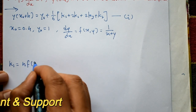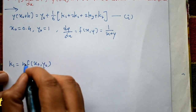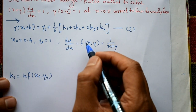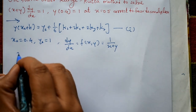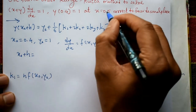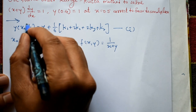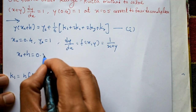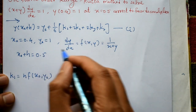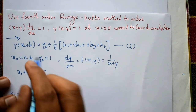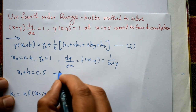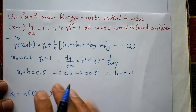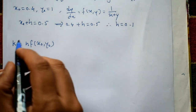To find k1, we need the h value. Since y(x₀ + h) = y(0.5), we have x₀ + h = 0.5 and x₀ = 0.4, so h = 0.1.